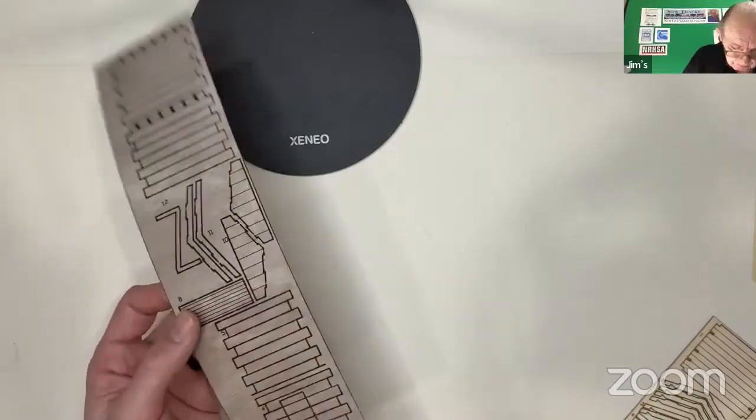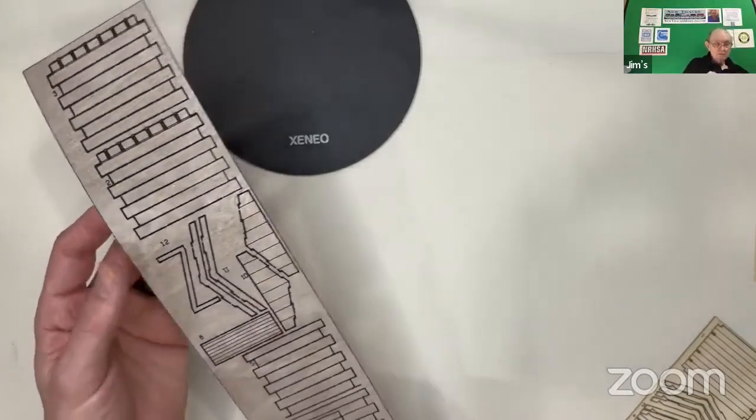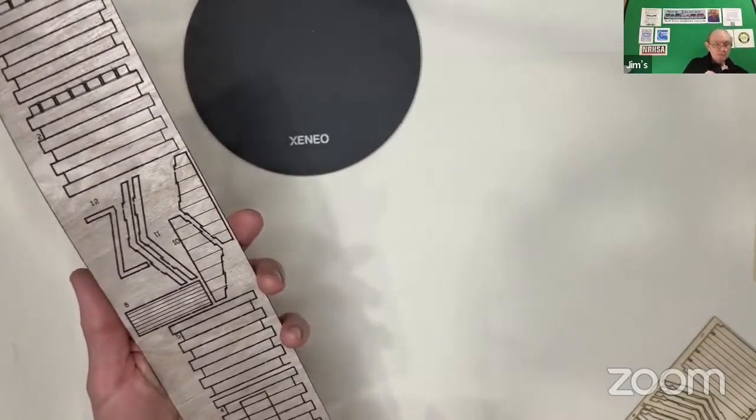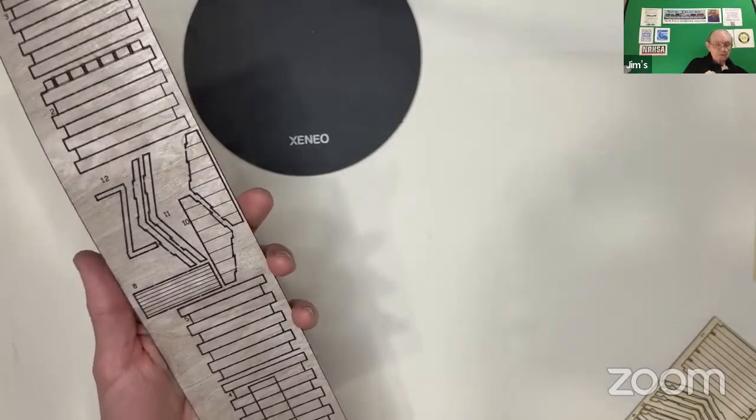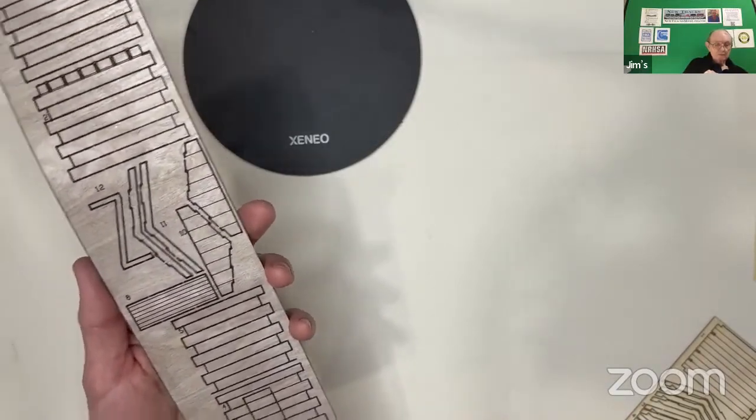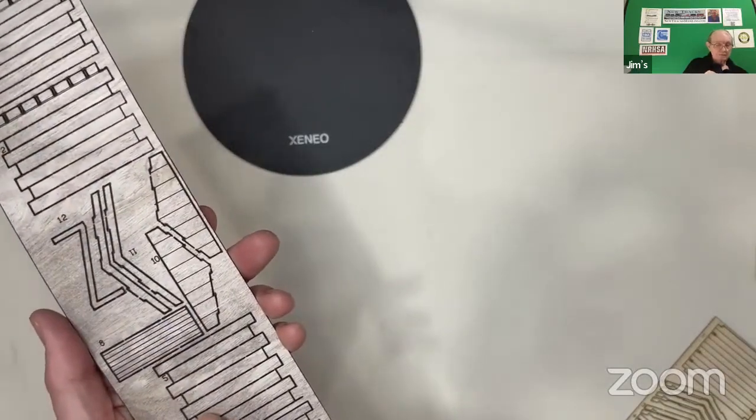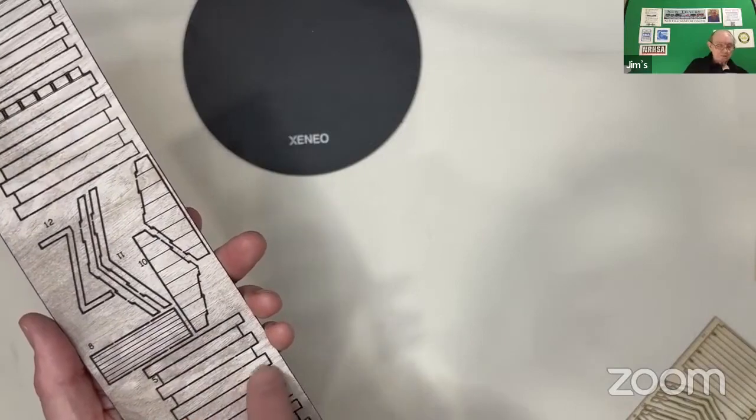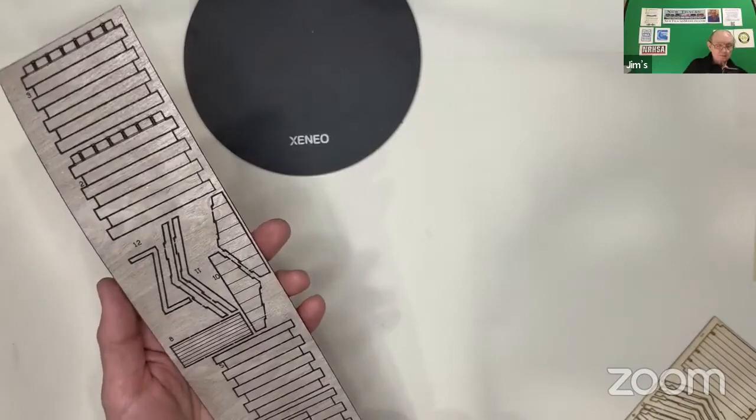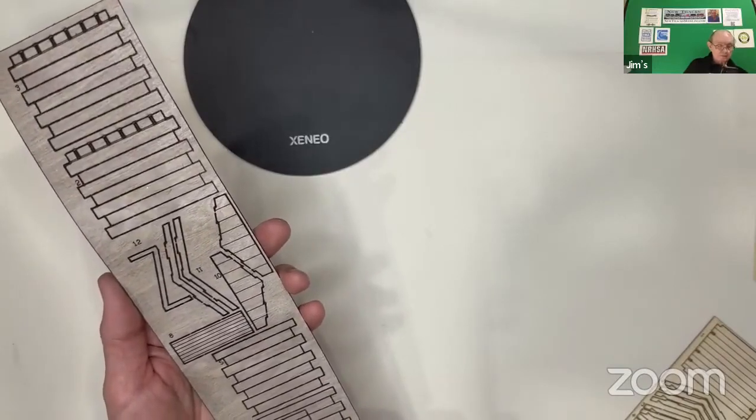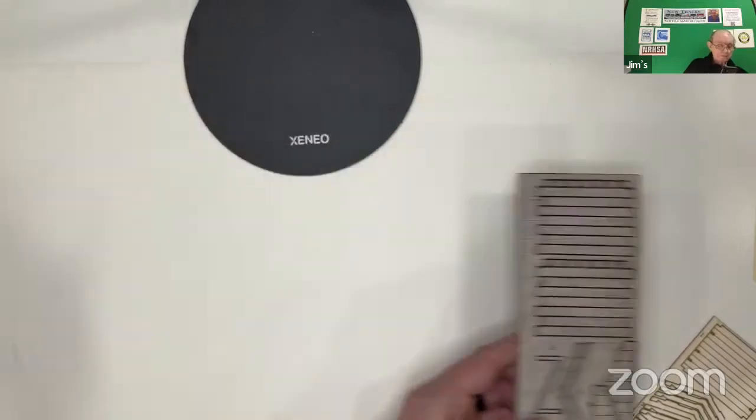This is made of 1/64th plywood. It is the worst substance ever. We really dislike working with it, but when you're working with something like this kit that might be stained instead of painted, we'll paint our version, but it can be done with stain and looks really nice when it's done that way, you need what the plywood offers, and that is genuine wood grain that can come out with staining.